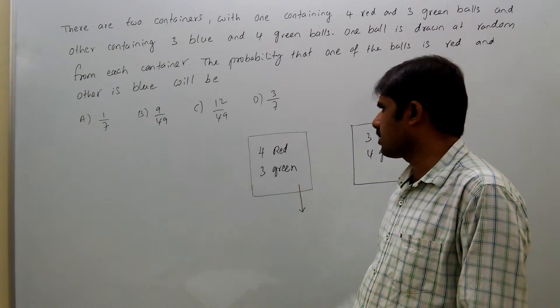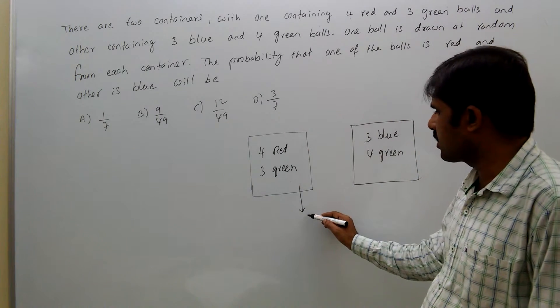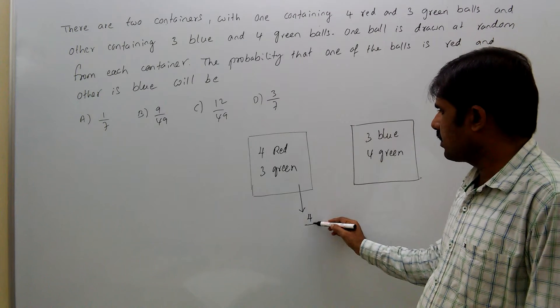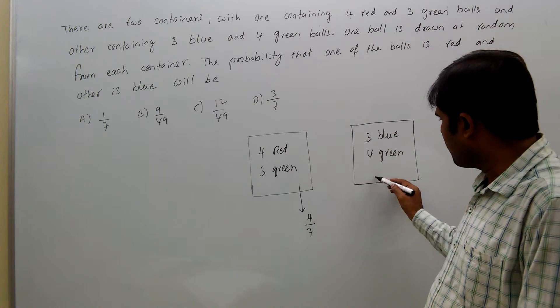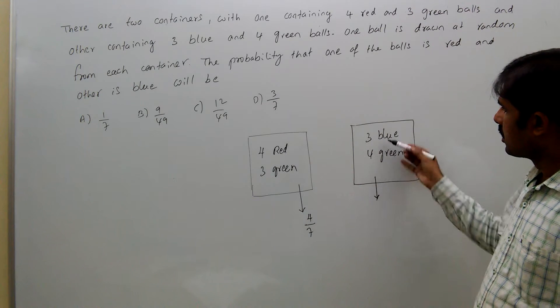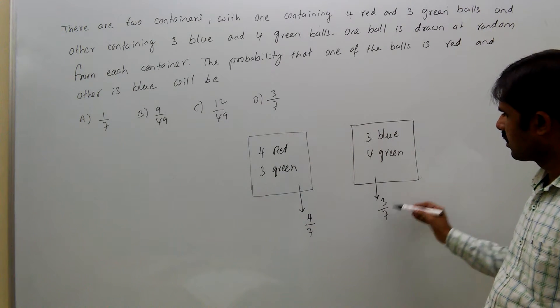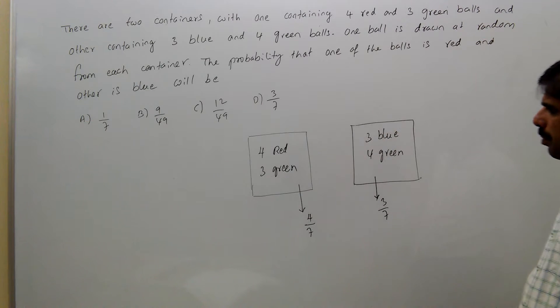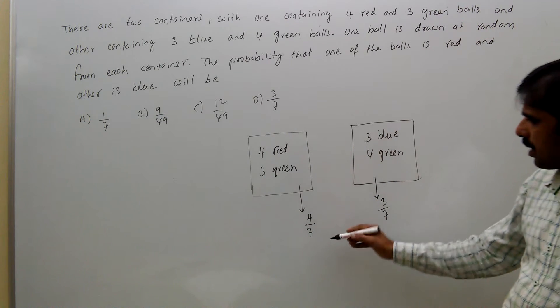Probability of getting a red ball is 4 by 7. From here, probability of getting a blue ball is 3 by 7.